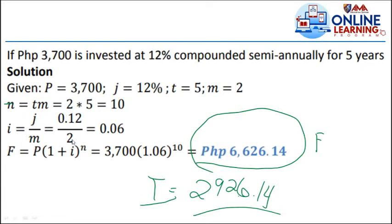i equals 0.12 divided by 2 because semi-annually, the answer is 0.06. So future value, P times 1 plus i raised to n. So we have 3,700 multiplied by 1 plus 0.06, that is 1.06, raised to 10. So after 5 years, the P3,700, we're going to have a total or a future value or a maturity value of P6,626.14. So with that, we earned P2,926.14, that's the interest on our money after 5 years.